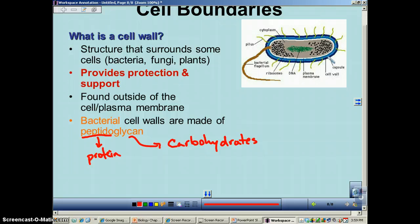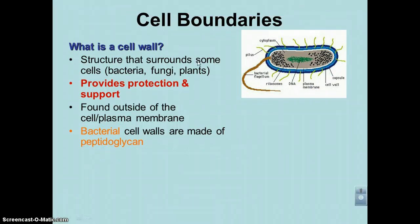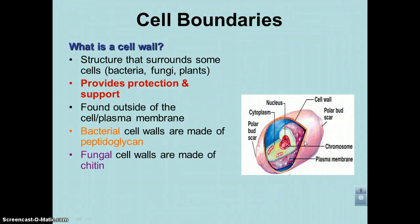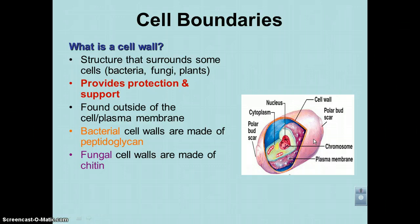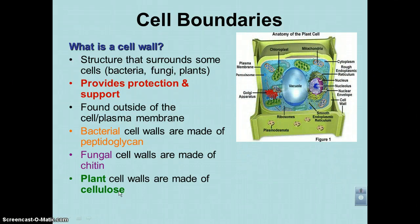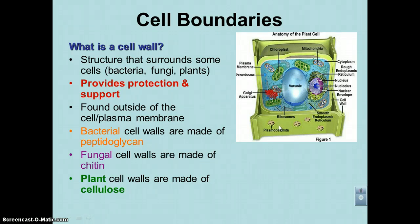Bacterial cell walls are made out of a structure called peptidoglycan. Peptido refers to protein, and the glycan part refers to carbohydrate — so it's made out of proteins and carbohydrates, mainly carbohydrates. Fungal cell walls, as seen in a yeast cell, are made out of chitin, mainly a carbohydrate very similar to cellulose. Plant cell walls are made out of cellulose — everybody should know that. Cellulose and chitin have a very similar structure, giving the plant cell strength and rigidity. The paper you might be writing on is made of cellulose, and wood is made of cellulose — so plant cell walls have major importance in our society.